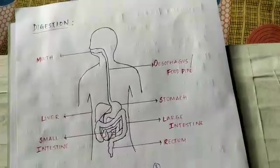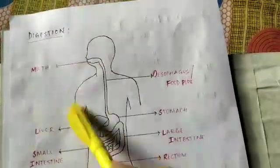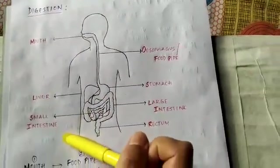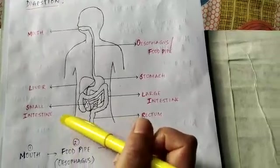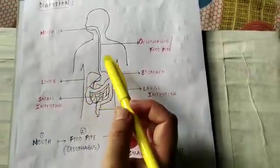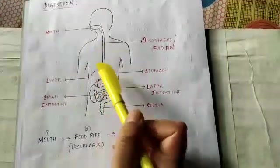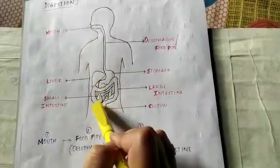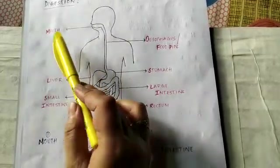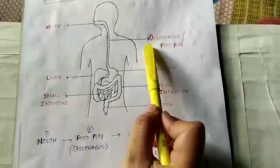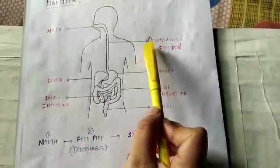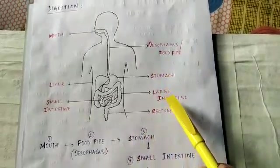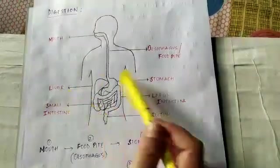The last topic is digestion. Digestion is the process where food is broken down into small pieces or small form so that our body can use it. The organs involved in the digestive system are the mouth, esophagus (the food pipe), stomach, small intestine, large intestine, rectum, and liver.